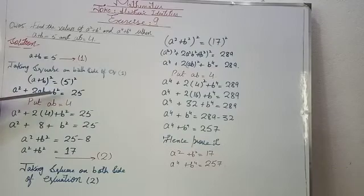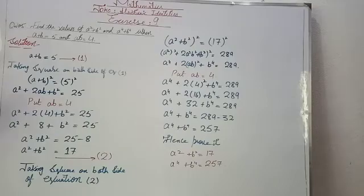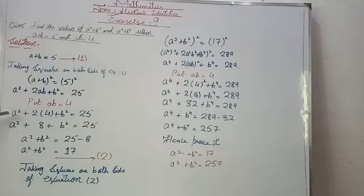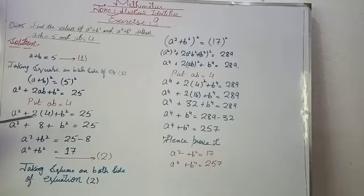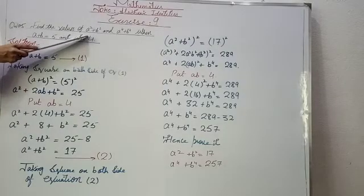So a² + 2ab + b² = 25. We know ab = 4, so substituting: a² + 2×4 + b² = 25, which gives a² + 8 + b² = 25. Transposing 8: a² + b² = 25 − 8 = 17.